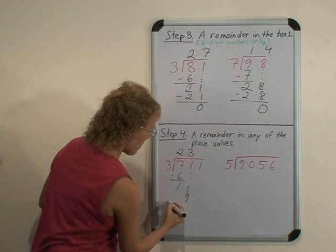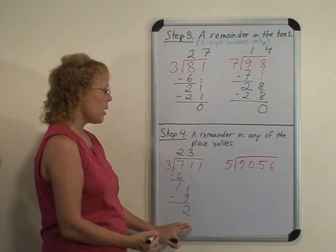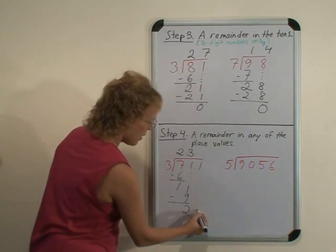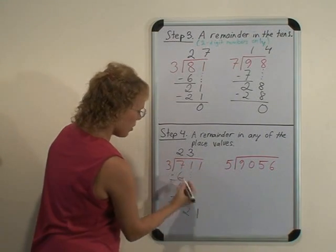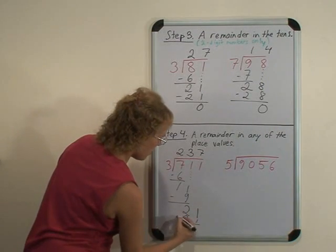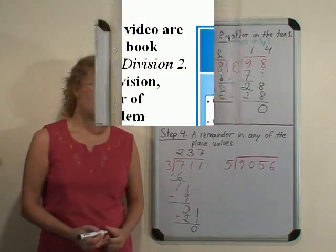And now we have a remainder of 2 tens, and that is combined with the 1 one, or added—1 and 2 tens. And 3 goes into 21 seven times, so it is again an exact division. And similarly we would do it with this, as you know as a teacher.